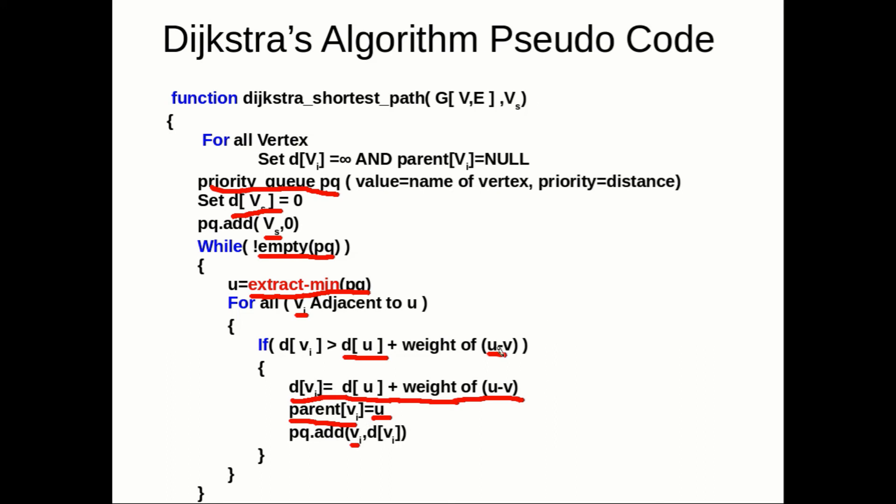Regarding time complexity: if we use a priority queue with an adjacency list representation, this algorithm takes O(V log E) time to compute the shortest path. If we use an adjacency matrix representation instead, it takes O(V²) time.